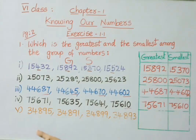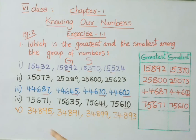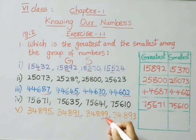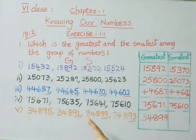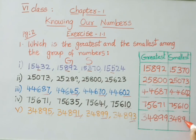See the last one: 34,895, 34,891, 34,899, and 34,893. Which is greatest and smallest? The first three digits are the same — 3 and 48. Let us see the last two numbers: 95, 91, 99, and 93. The greatest is 99, so 34,899 is the greatest number. Among the remaining — 95, 91, and 93 — the smallest is 91, therefore 34,891 is the smallest number.